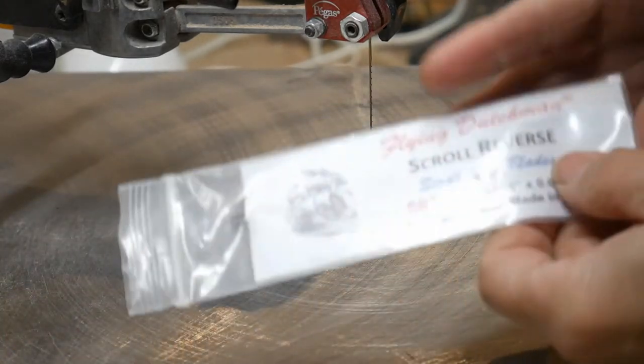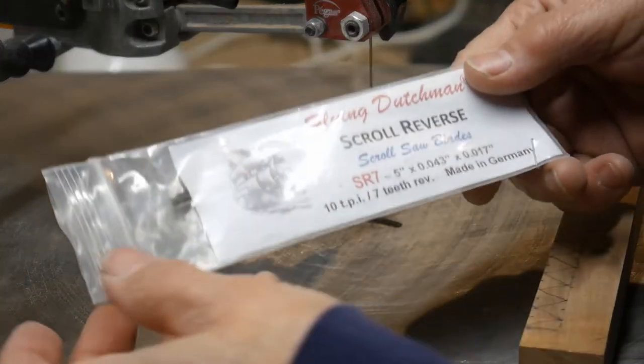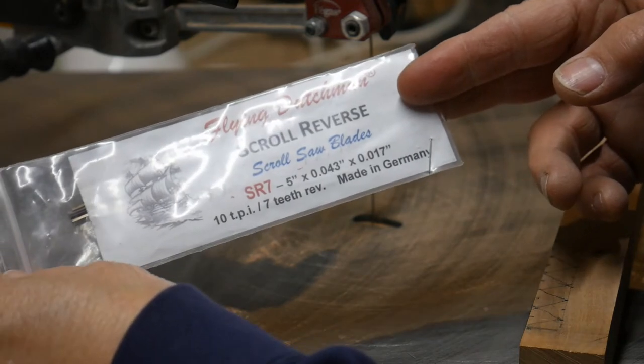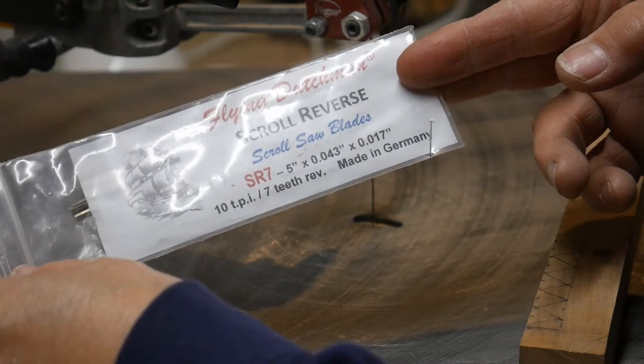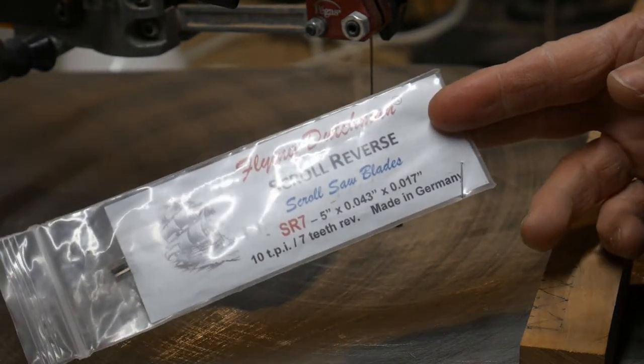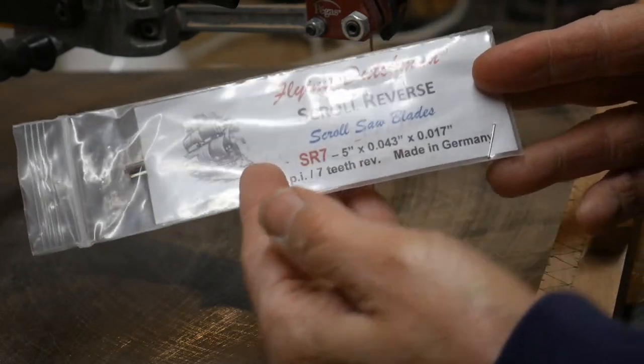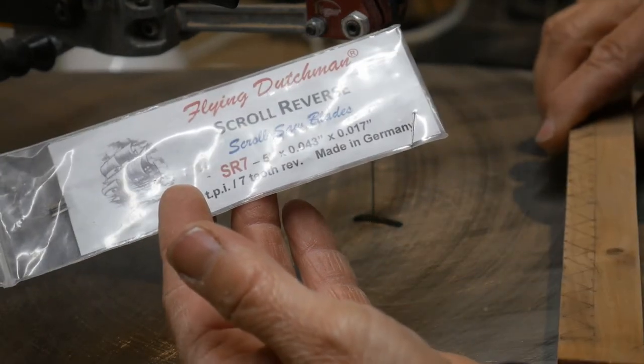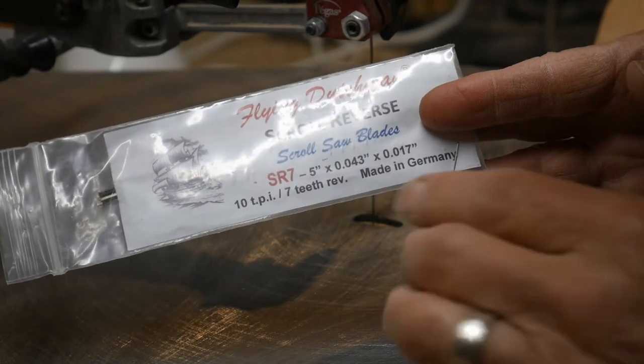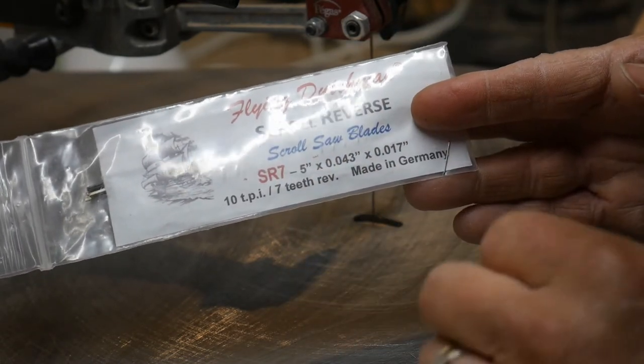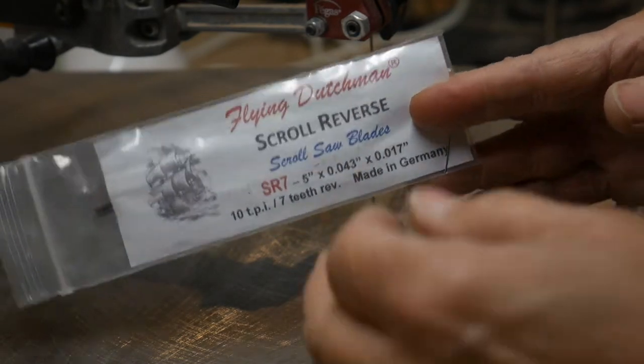Always use a brand new blade for your project. On this one I'm using a scroll reverse seven, number seven Flying Dutchman. Any woodwork you could probably go to a size five. But since it's a bit of a hardwood I decided to go up to a size seven. And it's not super intricate so it should work just fine.